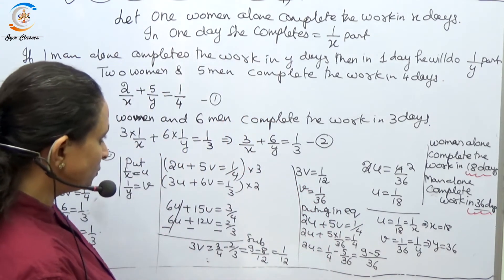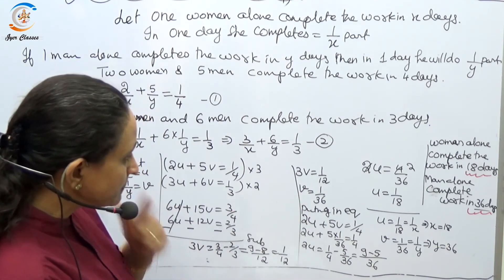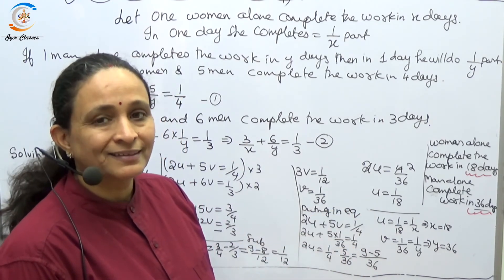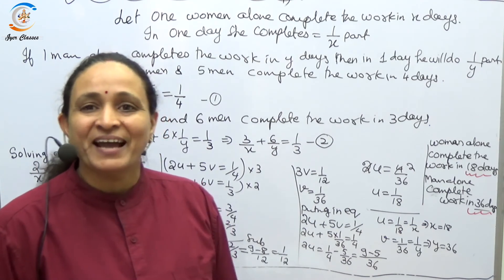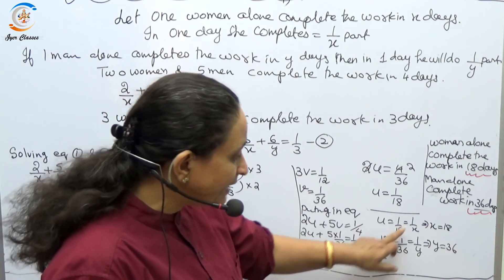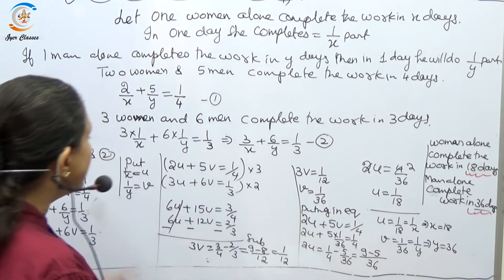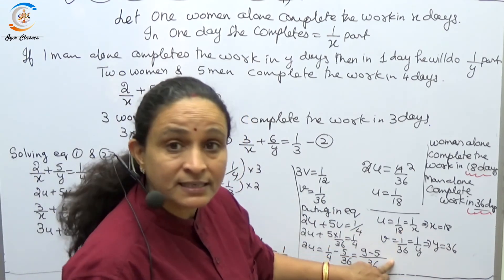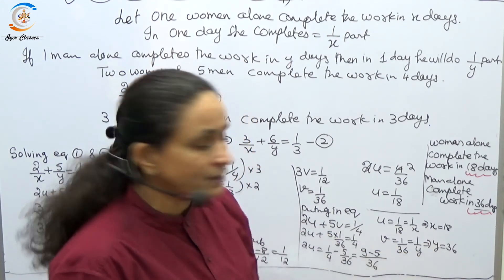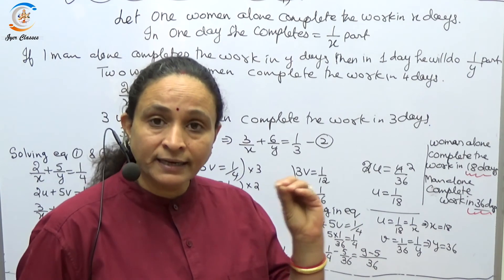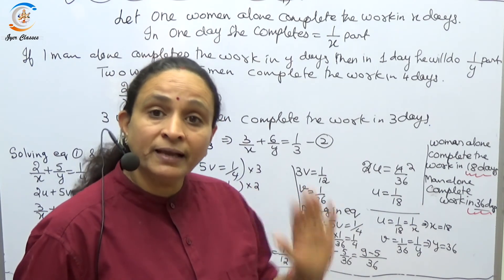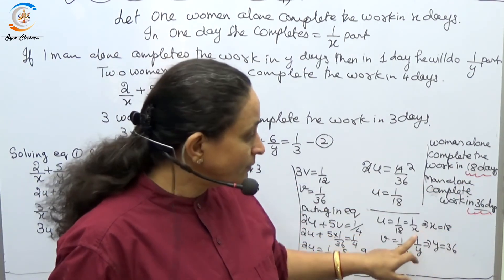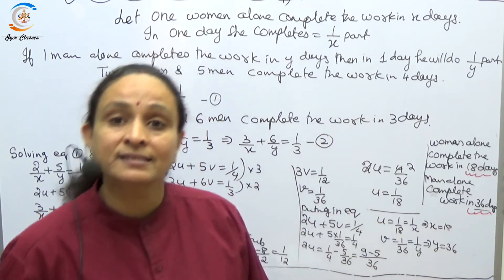Since u = 1/x = 1/18, we get x = 18. Since v = 1/y = 1/36, we get y = 36. This means if a woman alone is given the embroidery work, she will complete it in 18 days. If a man alone is given the same work, he will complete it in 36 days.